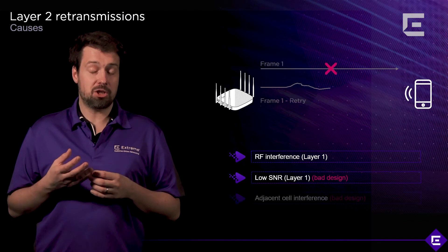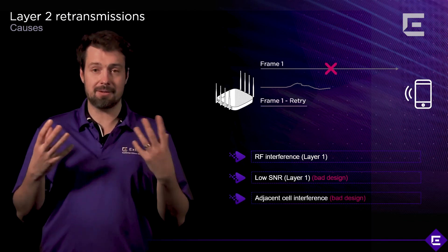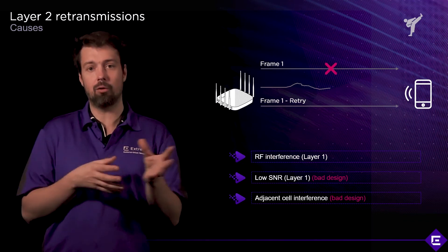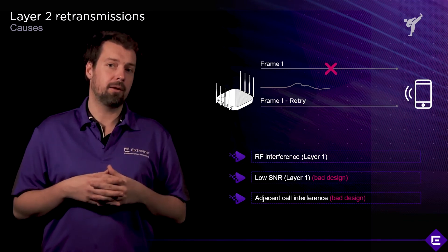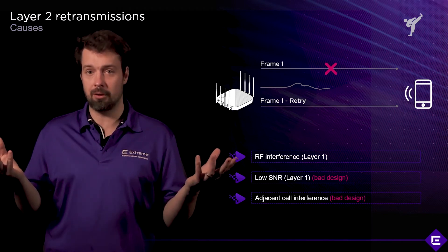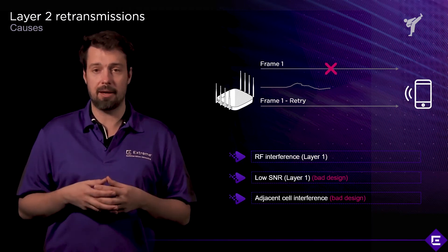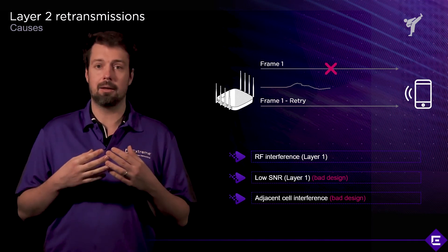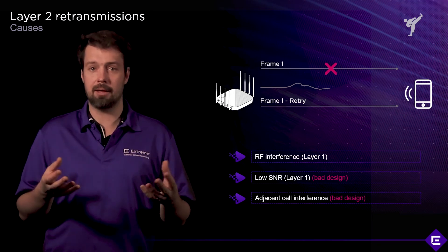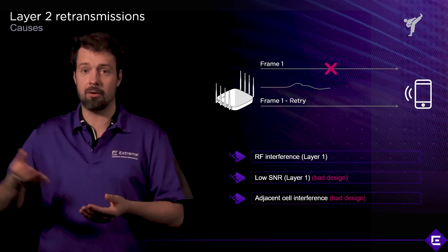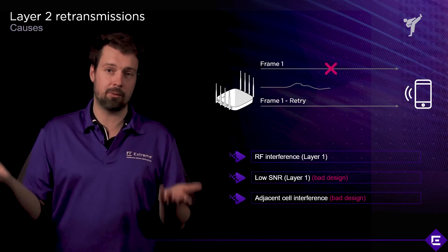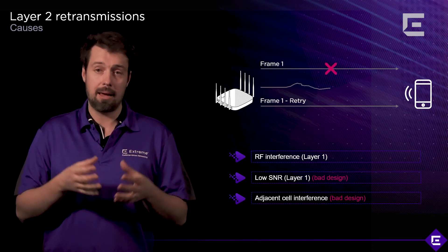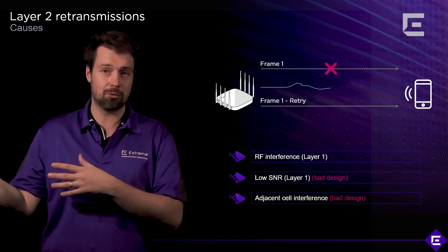Another source could be adjacent cell interference. Adjacent cell, or adjacent channel, is a channel overlapping with the channel currently in use — something you should normally not do. However, in some cases adjacent channels are used by neighbors, such as a company in a shared office space deploying their own Wi-Fi with channel selection that interferes with yours. In that case, you probably should not be using some of those channels, and usually the best answer is to move to 5 GHz.